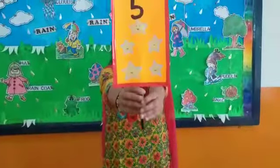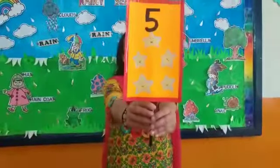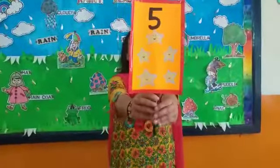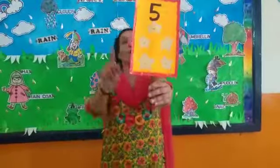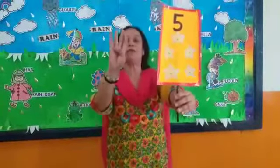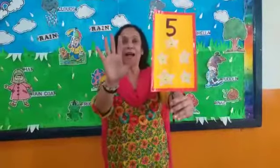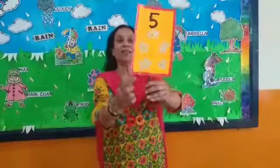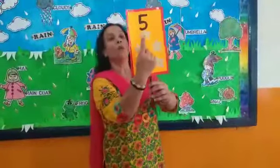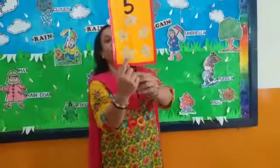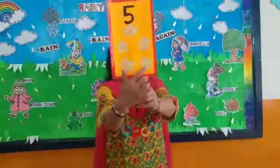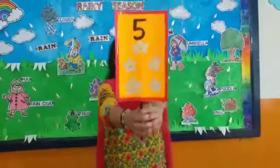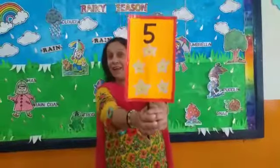This is number 5. 5 — 1, 2, 3, 4, 5. Yes. And let's count the stars. 1, 2, 3, 4, 5. These are 5 stars.